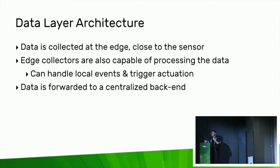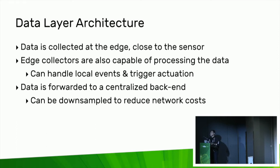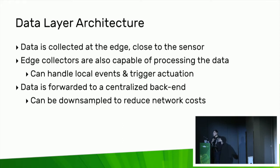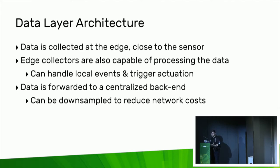From the edge device, you can actually forward data to a centralized backend, and as you do that you can downsample the data to reduce costs. That addresses both the unreliable network issue and the cost of transporting all that data across the network. You can collect data at millisecond intervals on local devices and react very quickly to issues, while also sending downsampled one- or two-minute resolution data up to the central cloud for administrative staff to understand the general working of the environment.